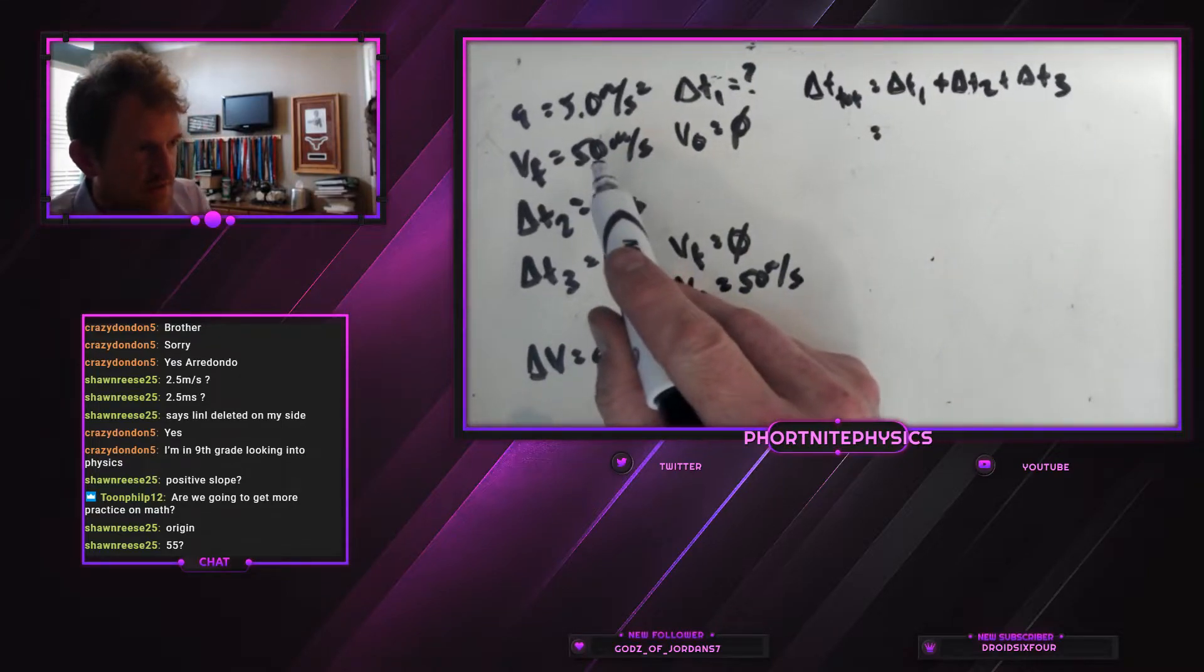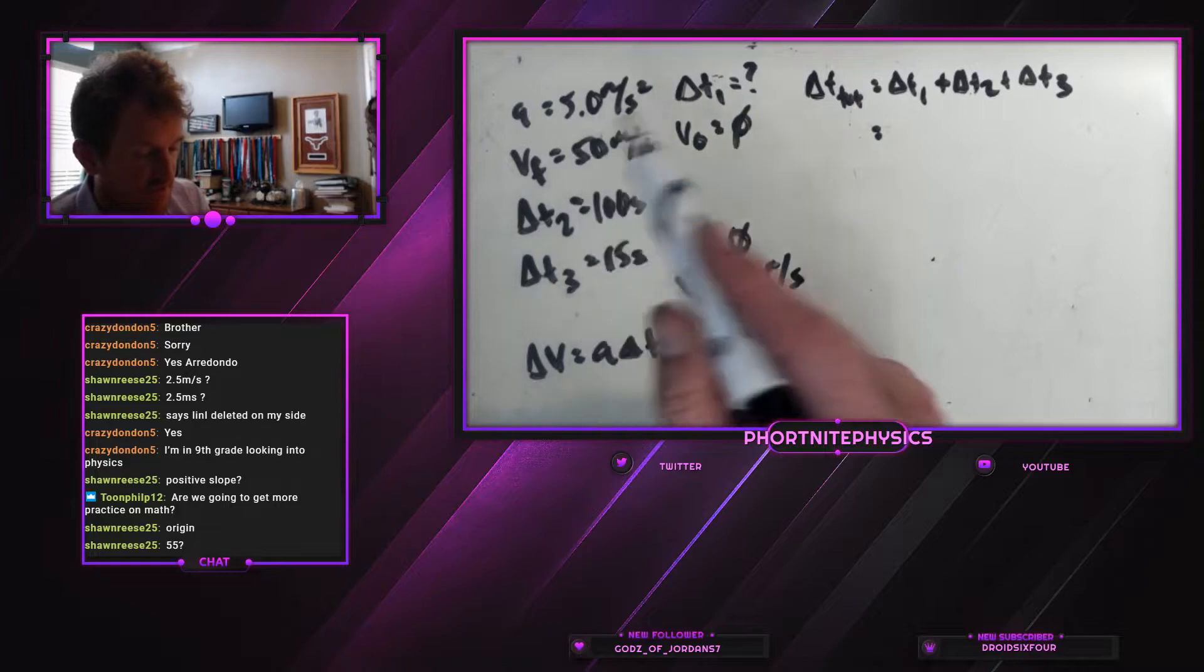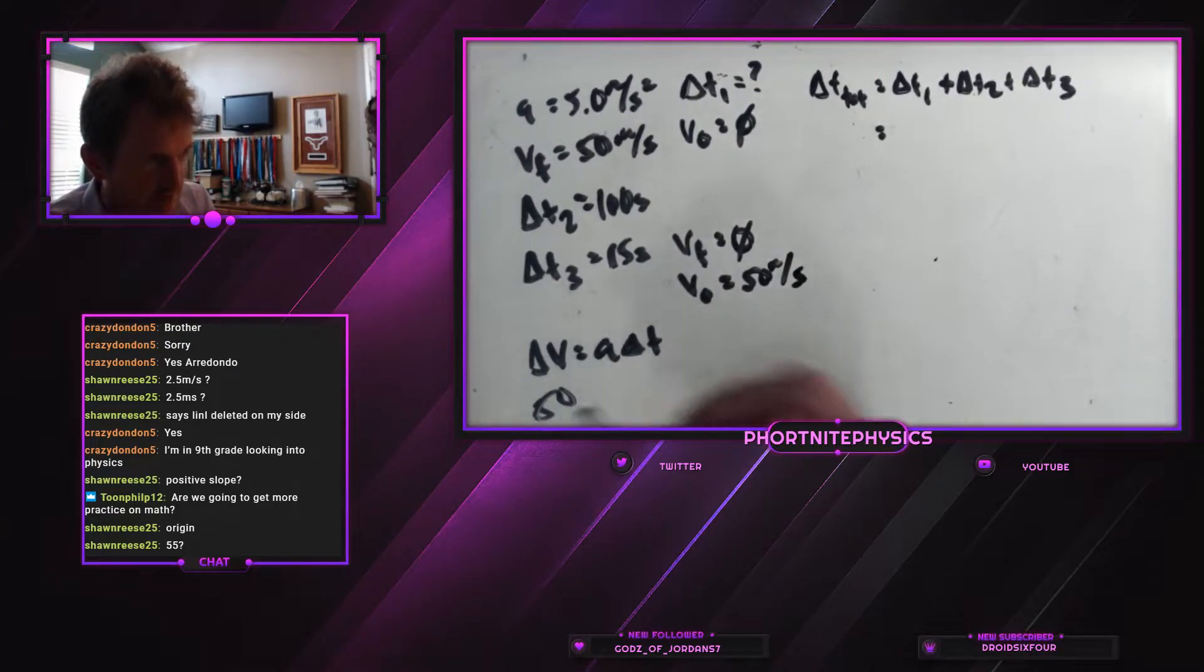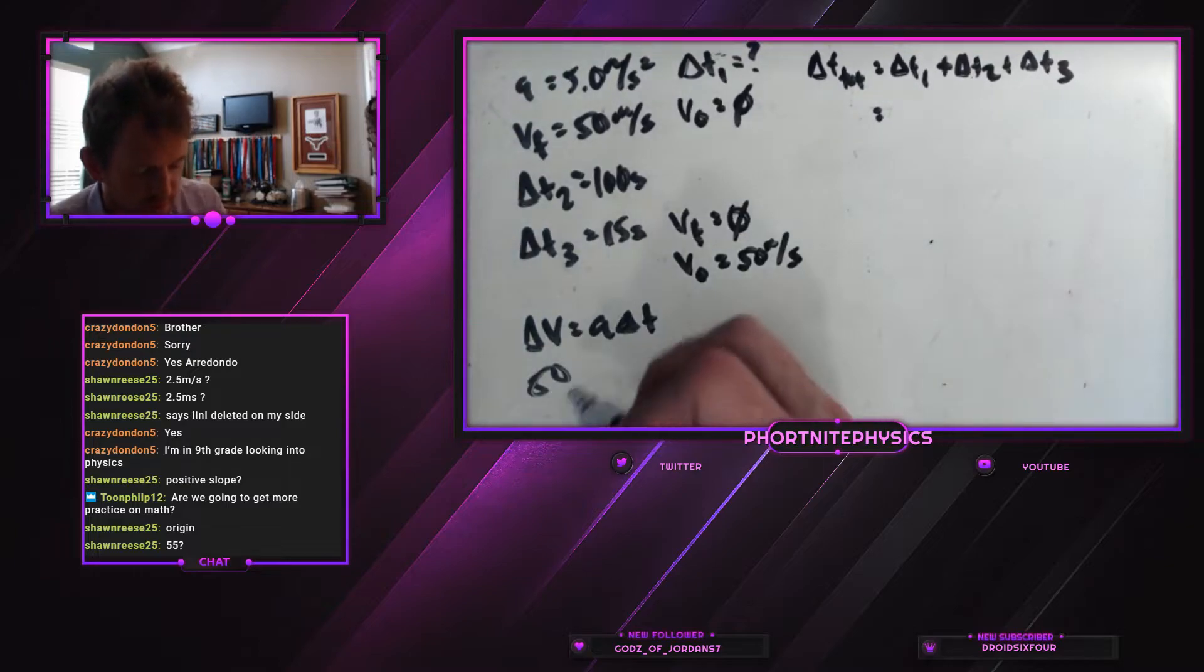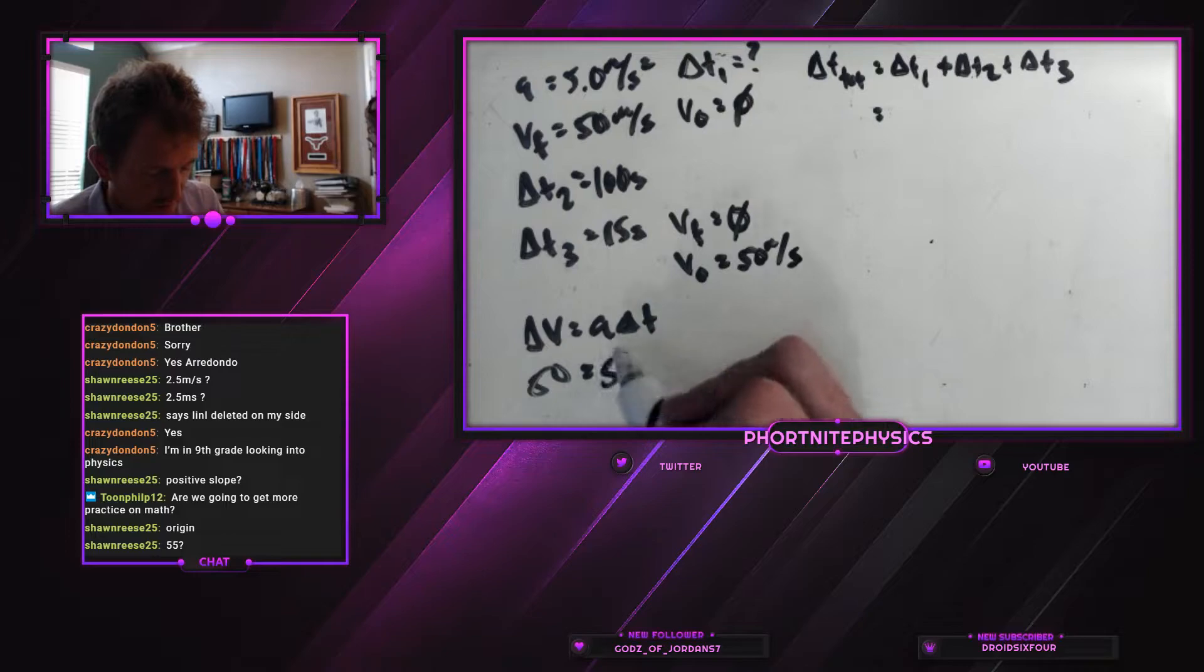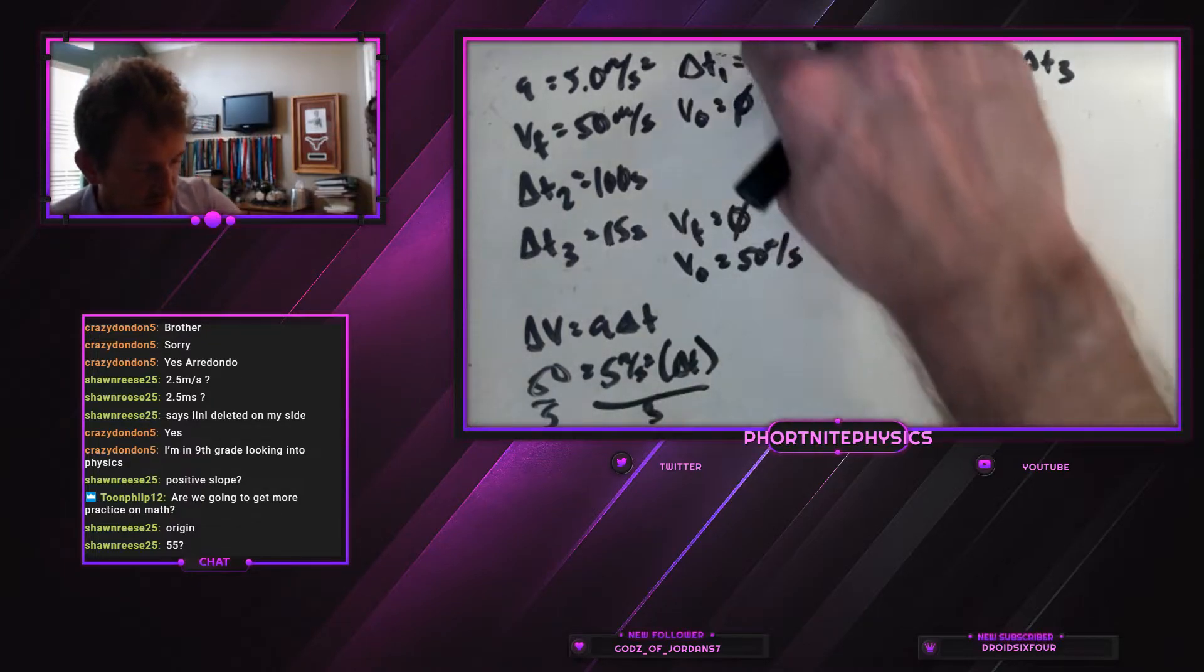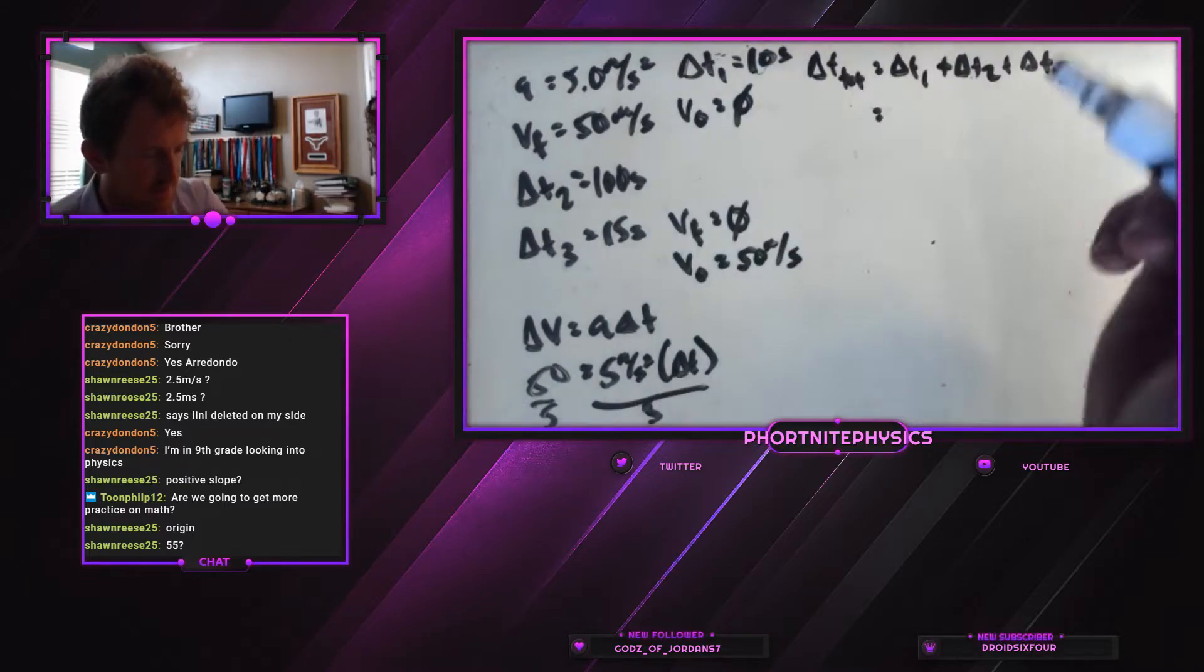We started at zero, so our delta time is just going to be 50 minus zero. 50 meters per second equals our acceleration which is 5 meters per second squared multiplied by our time. Divide both sides by 5. Delta t1 is 10 seconds.